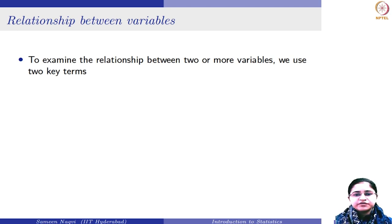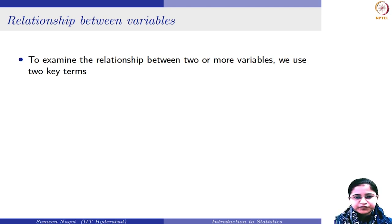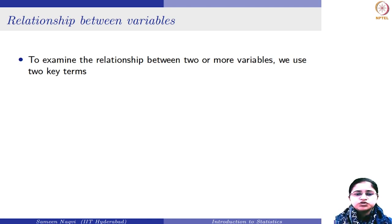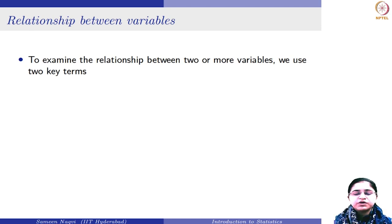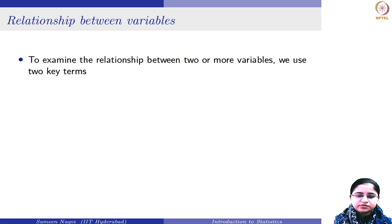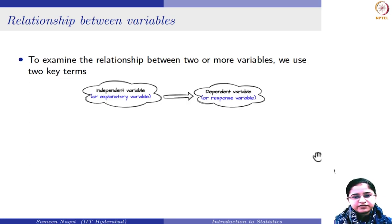After studying different types of variables, it is also important to identify the relationship between different variables. Suppose you want to examine the relationship between two or more variables, or you want to see how changes in one variable can bring a change in the other variable. In such a case, it is important to understand two key terms: independent variables and dependent variable.